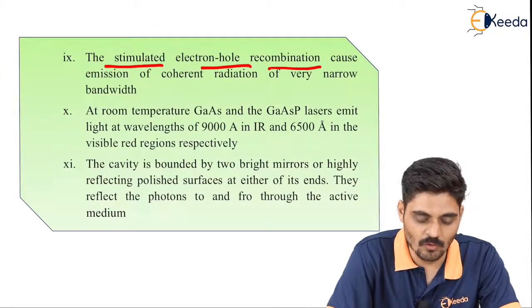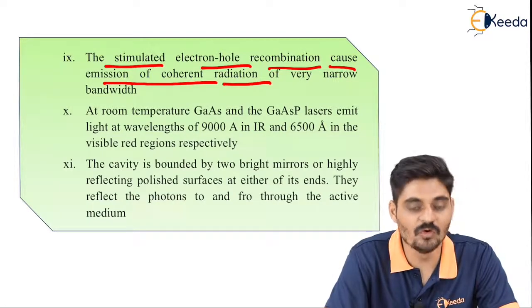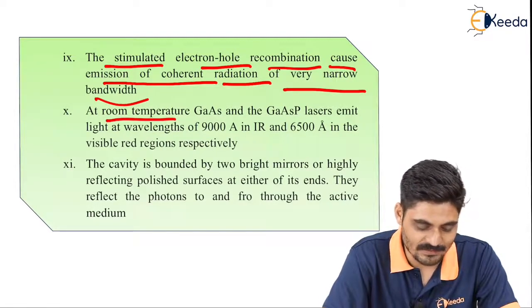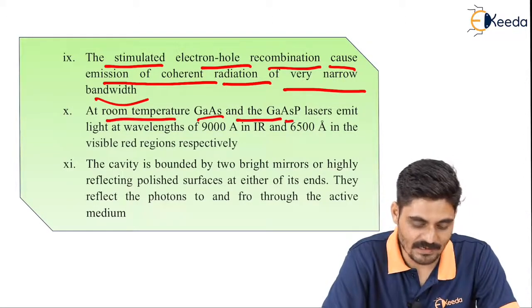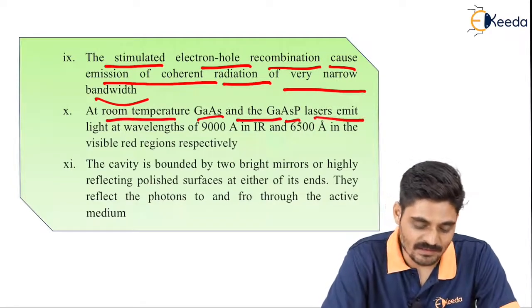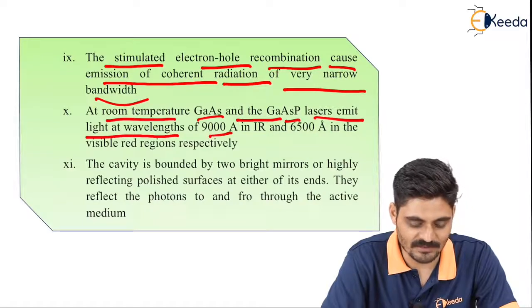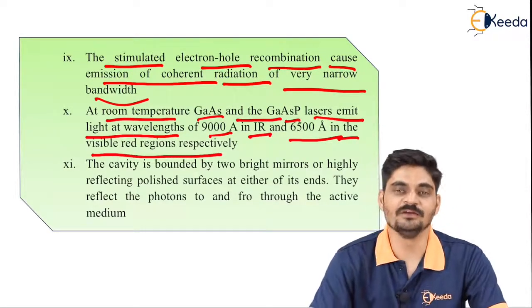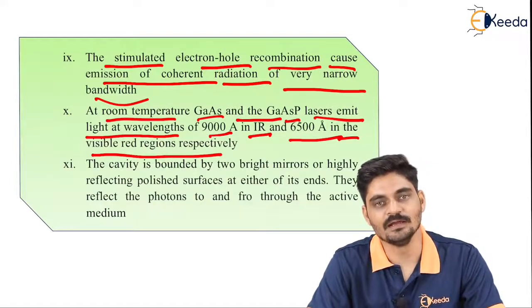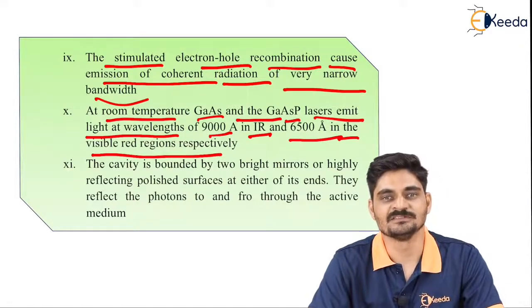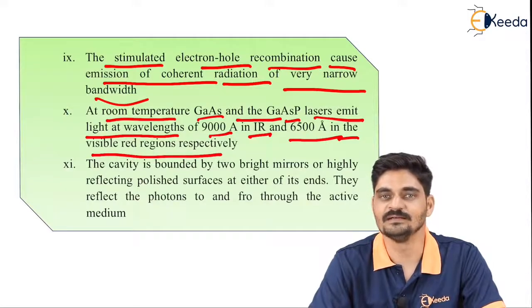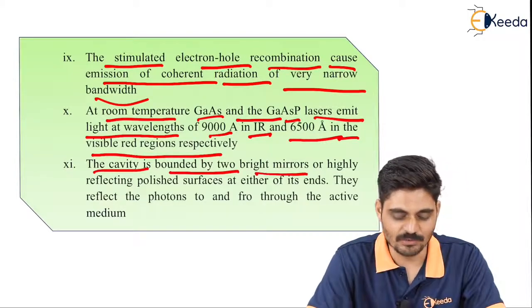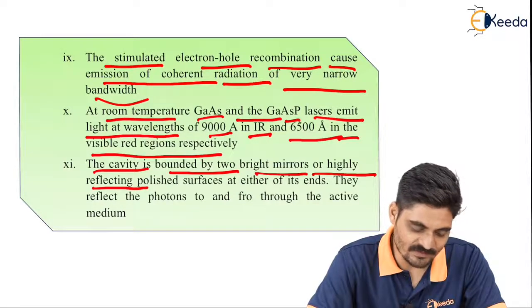The stimulated electron-hole recombination causes emission of coherent radiation of very narrow bandwidth. At room temperature, gallium arsenide (GaAs) and gallium arsenide phosphide (GaAsP) lasers emit light at wavelengths of 9000 Angstroms in the infrared and 6500 Angstroms in the visible red region, respectively. Unlike LEDs where light intensity is less, the semiconductor laser achieves higher intensity.